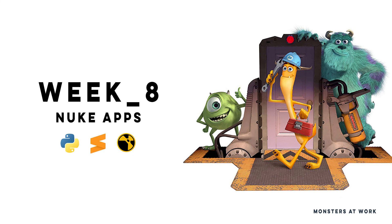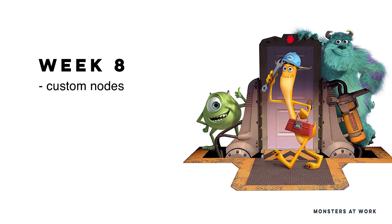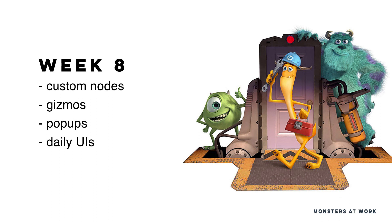Week eight: user interface. We focus on the Nuke UI since it is the simplest one we can use. First we visually customize the node graph by modifying the look and feel of our nodes. Then we go a step further and create our own custom node with custom knobs that we can link together to create a personal gizmo. Next we look into the simplest form of UI — the pop-up — which lets us communicate with the user and ask for inputs. Afterwards we create our own custom panel in Nuke, filling it with input sections, pull-downs, check boxes, and buttons. Finally we compare the Nuke UI with the more advanced PySide2 and wrap up with the last assignment in which we develop the application we set up to create on week one.